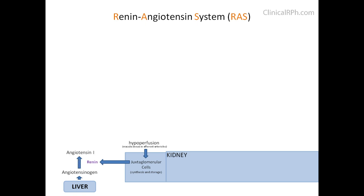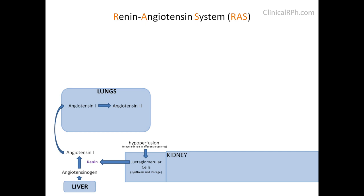Angiotensin 1 now travels to the lungs where it gets converted to angiotensin 2 by the angiotensin-converting enzyme (ACE). Angiotensin 2 is also known as angiotensin 1-8. This same enzyme also breaks down bradykinin to inactive peptides.